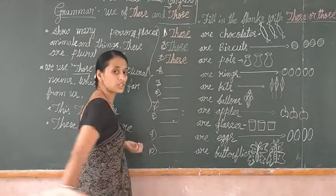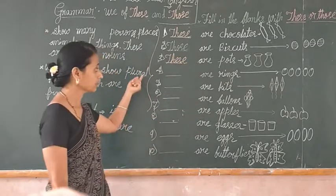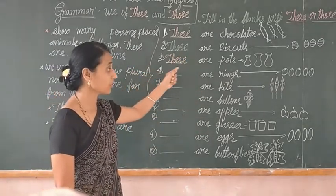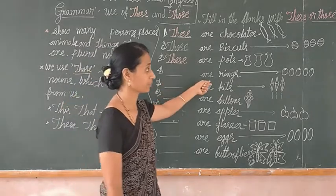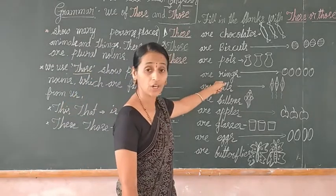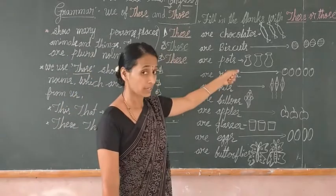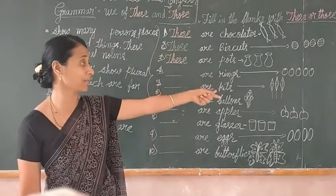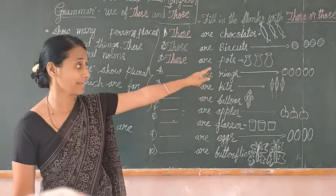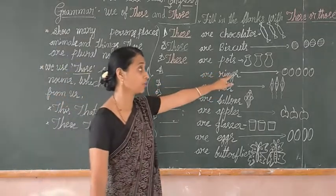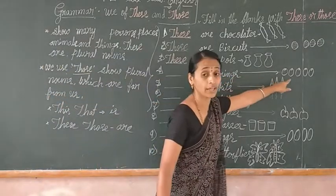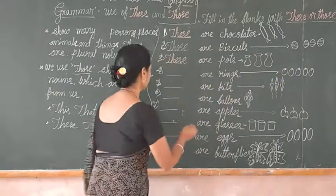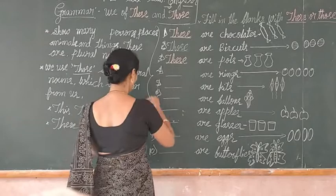Next, fourth example: blank of rings. Are the rings near to me or far away from us? Yes, rings are far away from us, so we can use 'those.'